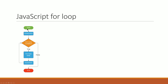The JavaScript for loop has three parts: the initialization stage, the condition — which is true or false, for example i is less than 5 — and the increment counter. The condition controls whether to execute the loop body.